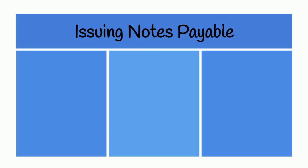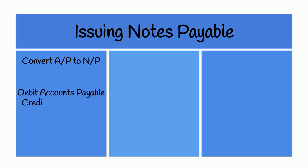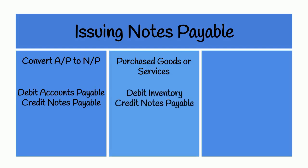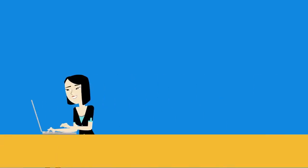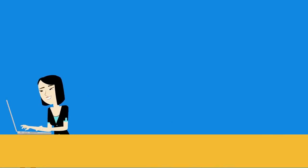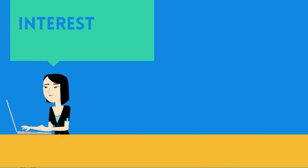Notes payable can be issued for multiple reasons. We might have had an accounts payable that we needed more time to pay and converted it to a notes payable — we record this with a debit to accounts payable and a credit to notes payable. We may have purchased goods or services on a note, recorded with a debit to inventory or an expense account like repairs and maintenance expense, and a credit to notes payable. Or we could have borrowed money, recorded as a debit to cash and a credit to notes payable.